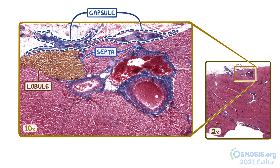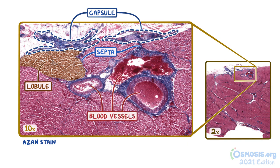This section of the pancreas was prepared with Azin stain, which stains collagen in a bluish-purple color in order to highlight structures like the capsule, septa, as well as the connective tissue that surrounds large blood vessels.